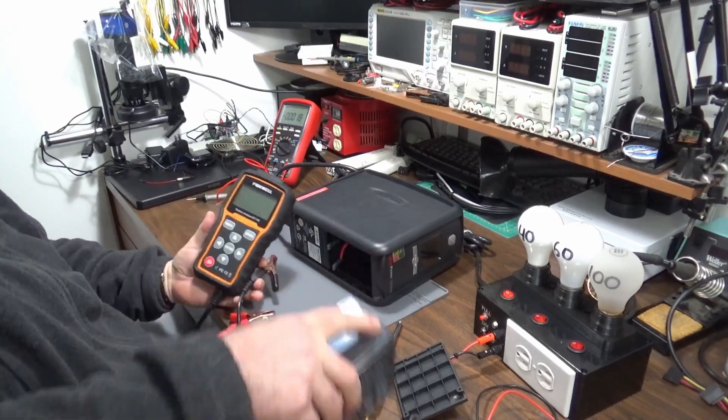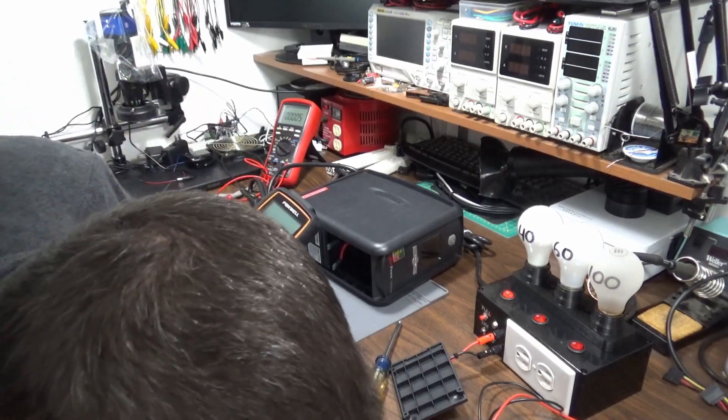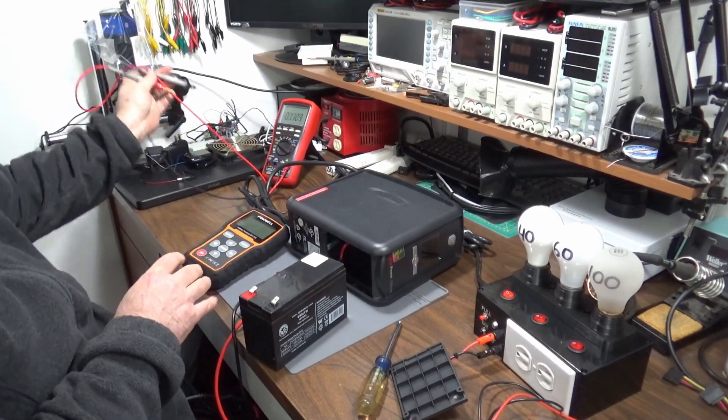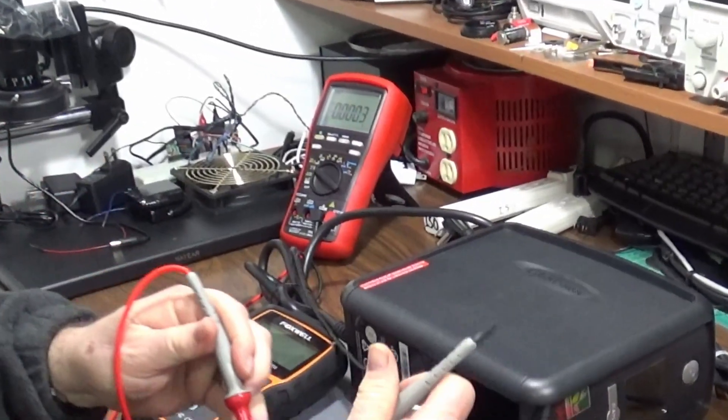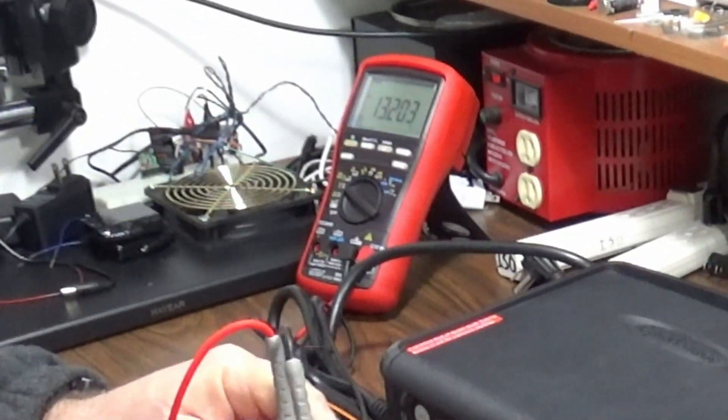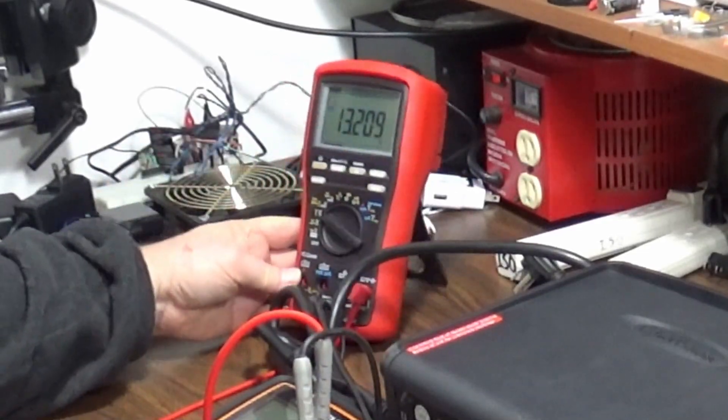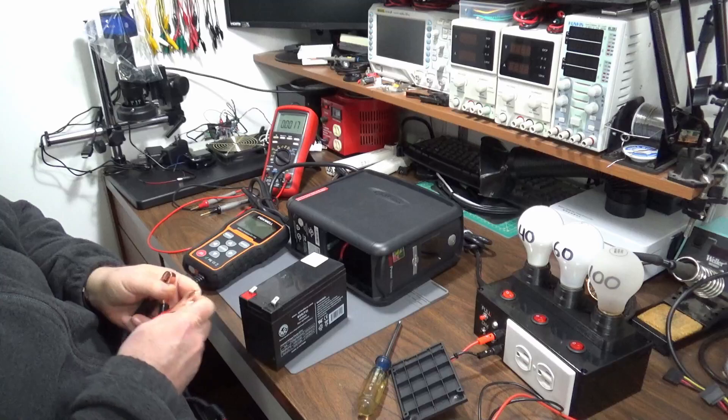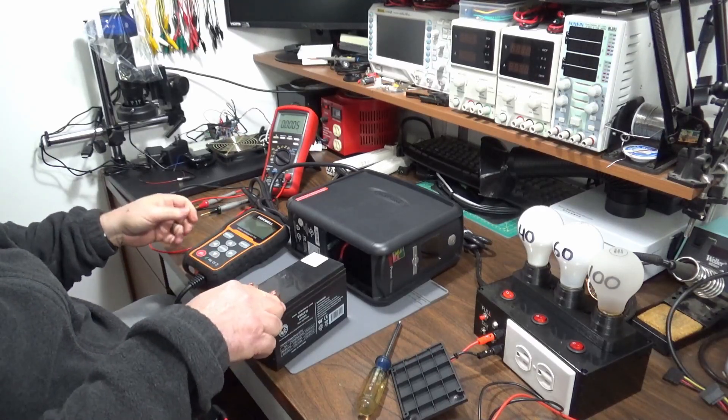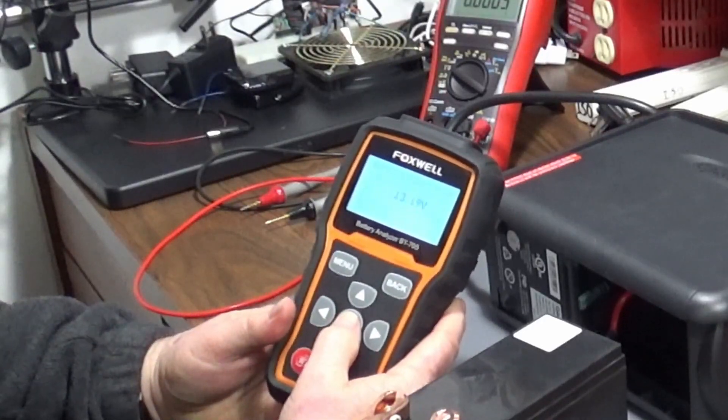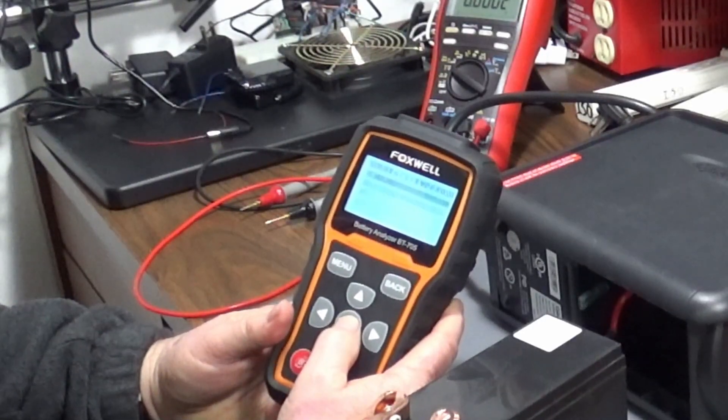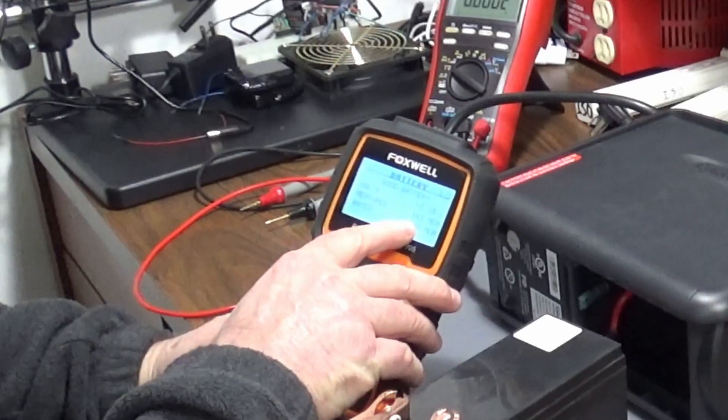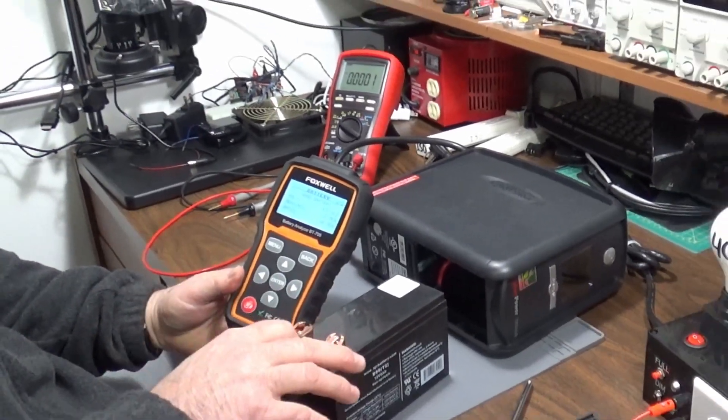So I ordered another battery on Amazon like everybody else. I figured we'll test this battery. First voltage test. 13.2. Put the battery tester on it. 13.2. 12 volt. Out of vehicle. Top post. AGM. Cranking amps. 100 amps. Test it. 161 cranking amps. That's a much more capable battery.